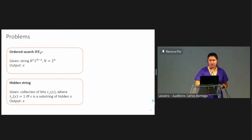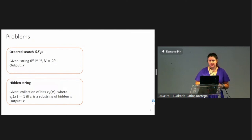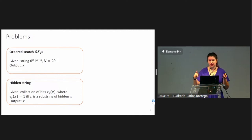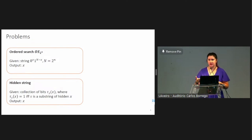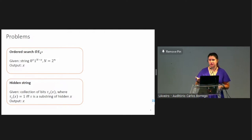In this work, we consider approximate degree and quantum query complexity of two problems. The first one is ordered search: the input is a binary string that starts with a bunch of zeros then is followed by a bunch of ones, and the goal is to find the location where the string splits. The most trivial way to solve this is through binary search, and this problem was actually introduced as an abstraction of binary search.